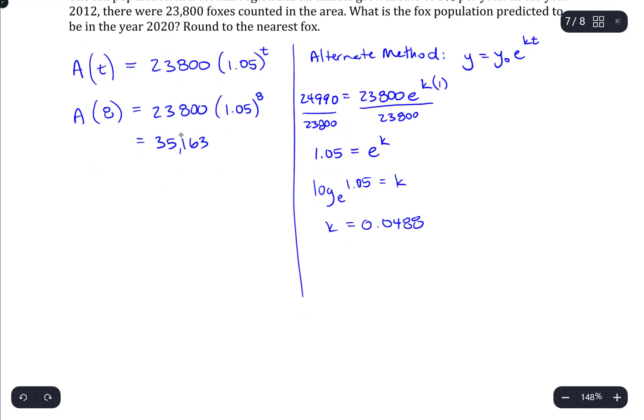So, what we have now is the growth model. y equals 23,800 e to the 0.0488 times t.